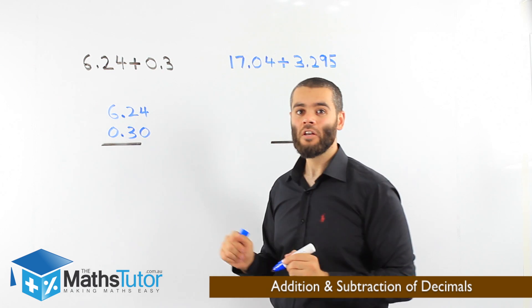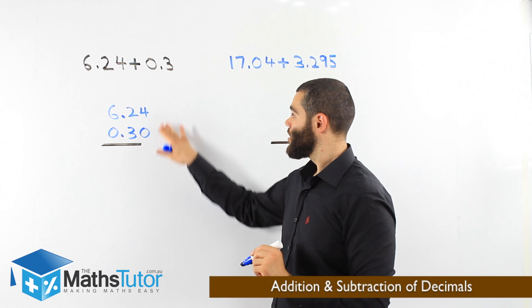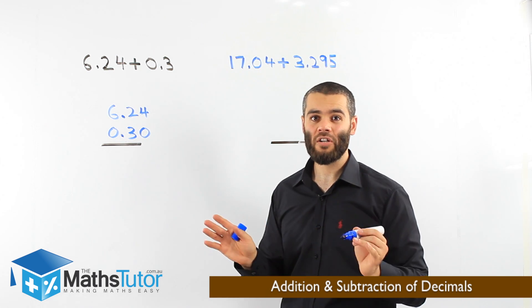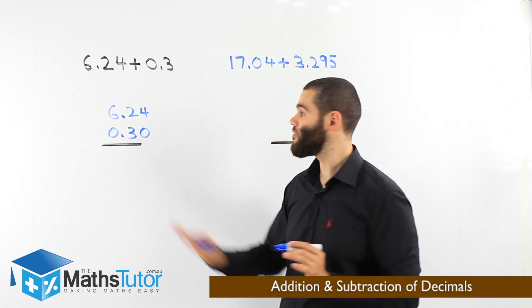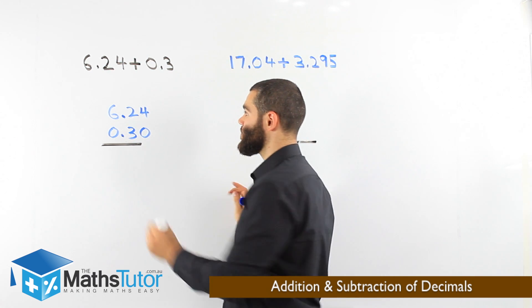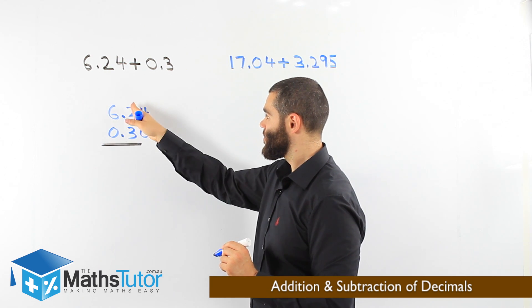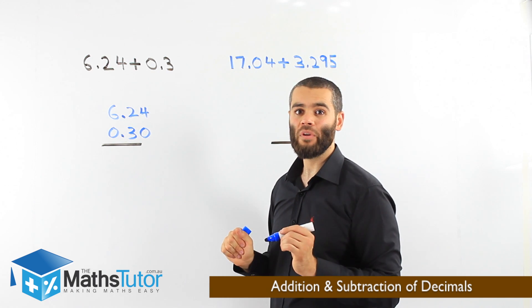Now, notice I didn't put a plus because we don't need to. When we have an algorithm without an addition sign, without a subtraction sign, without a division or a multiplication, we know straight away it is addition. Here, we start adding. We've put the units under each other, the tenths under each other, and the hundredths under each other. Now, we start adding.